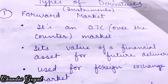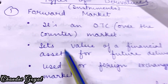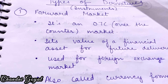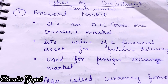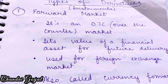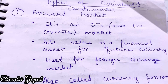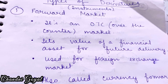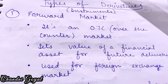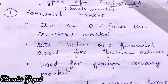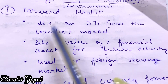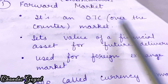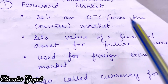Now we will see types of derivatives, in which we will discuss only two of them. The first is the forward market. Please also check the previous video which is about derivatives. The forward market is an OTC market — OTC means over-the-counter market.